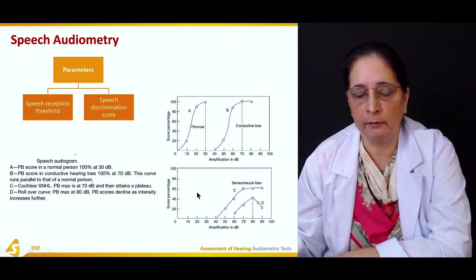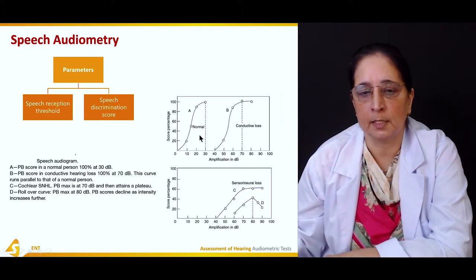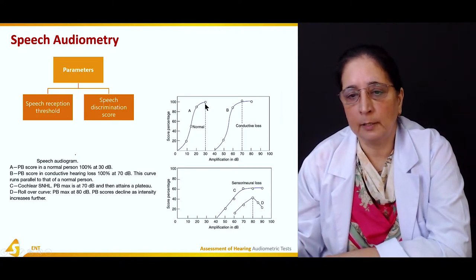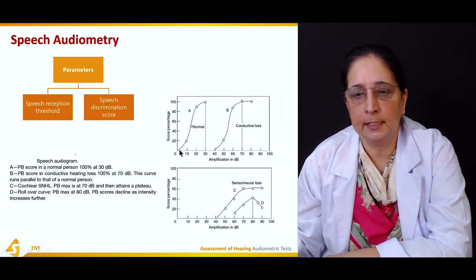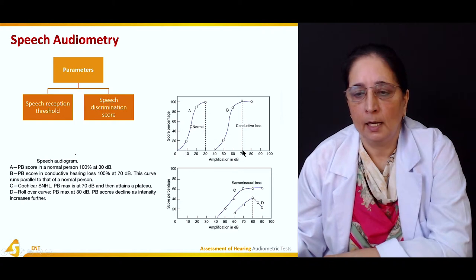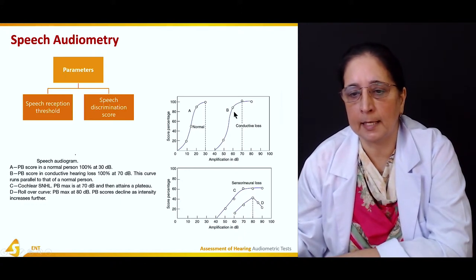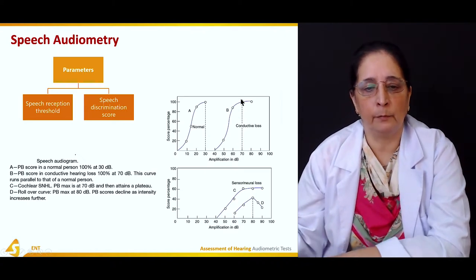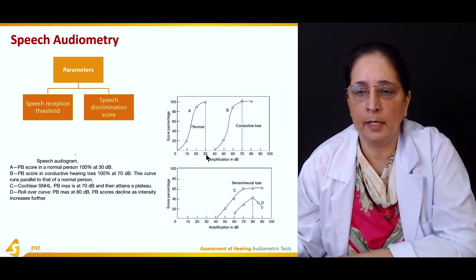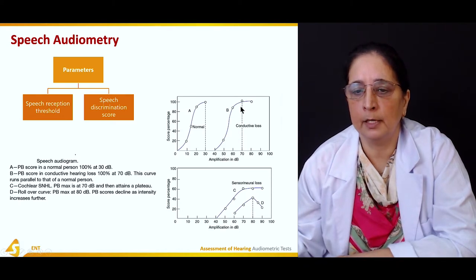Different graphs are shown here. Graph A represents normal hearing, where phonetically balanced word score is 100% at 30 decibels. In graph B, which represents conductive hearing loss, the score is 100% at 70 decibels, and the curve runs parallel to that of the normal.